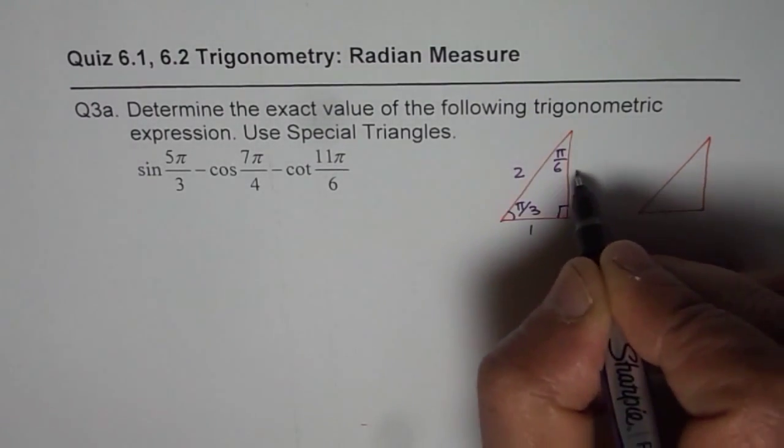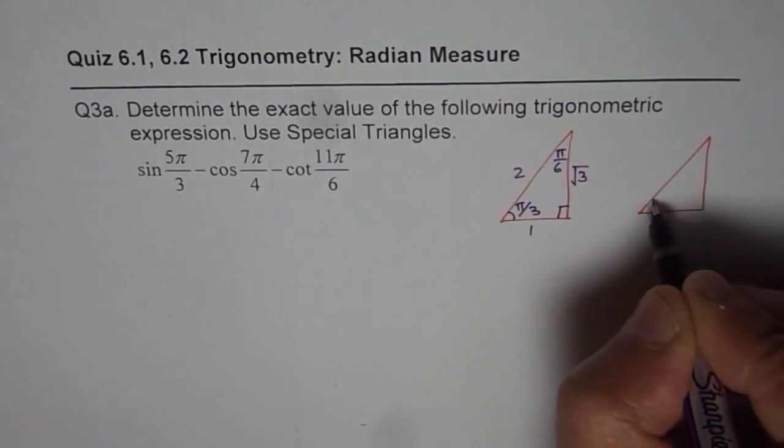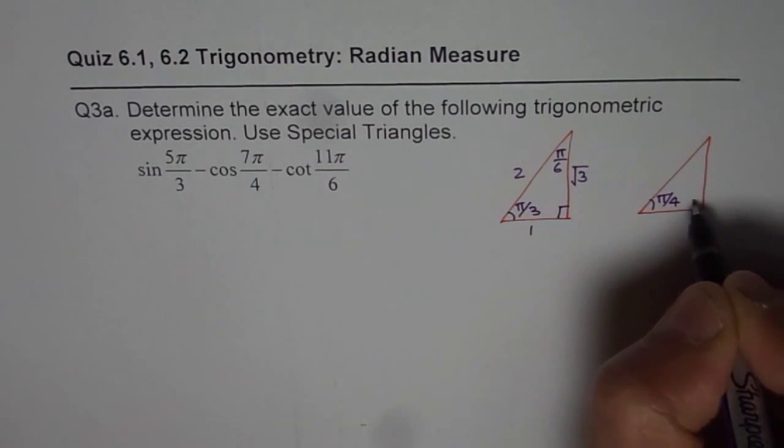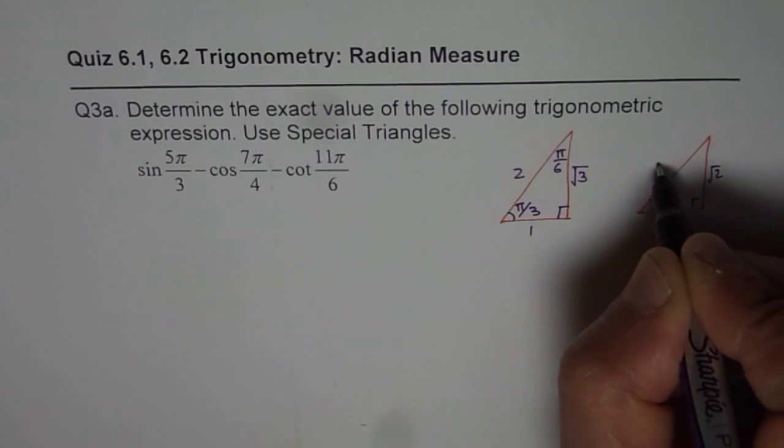The sides are 1 to √3. Here, we have π/4, the sides are √2, √2 and 2.